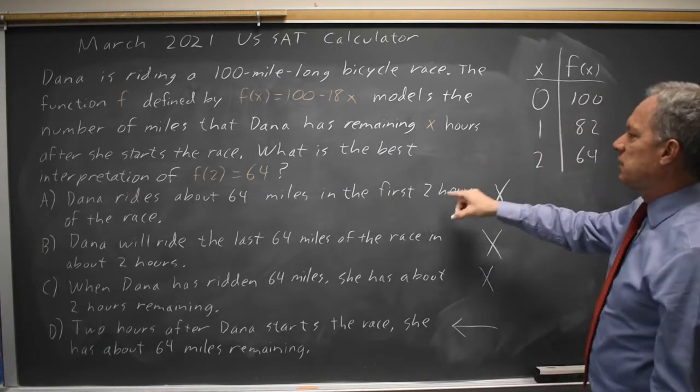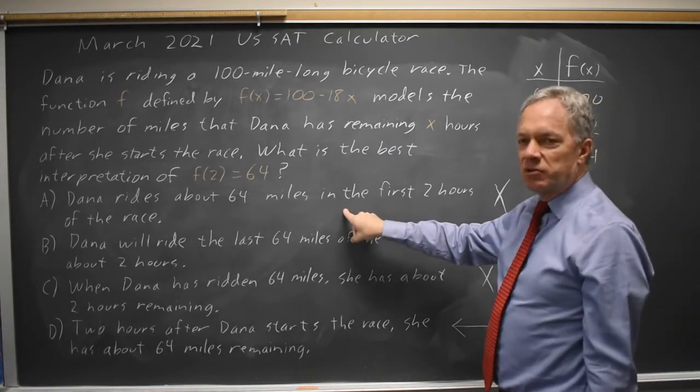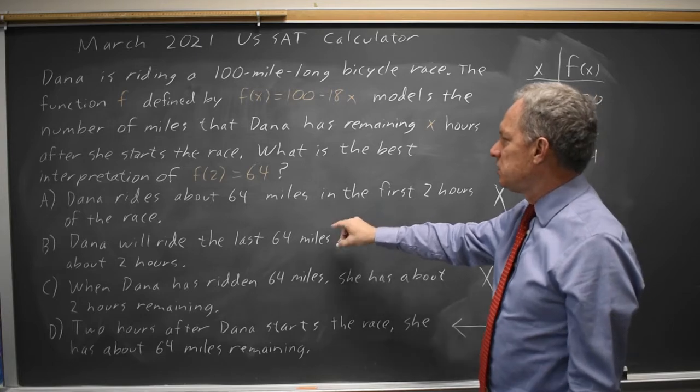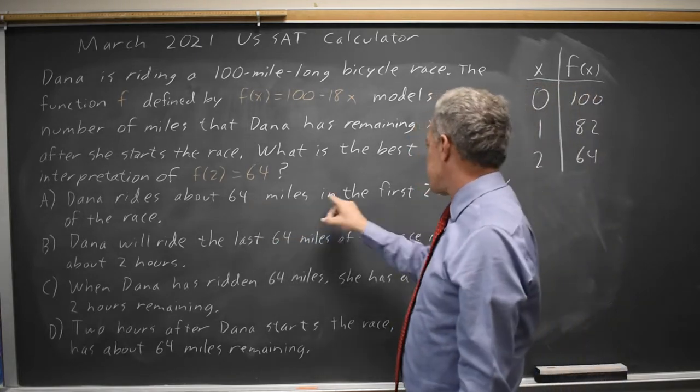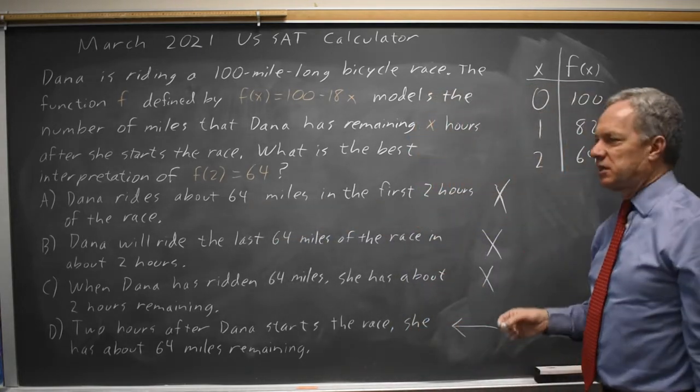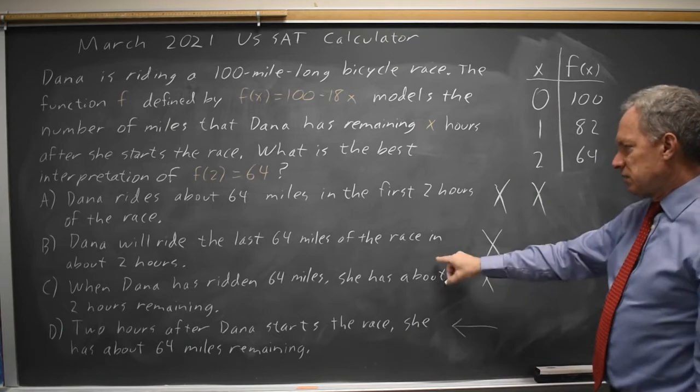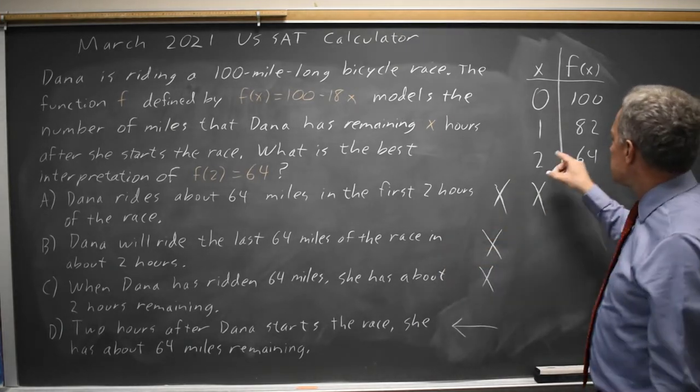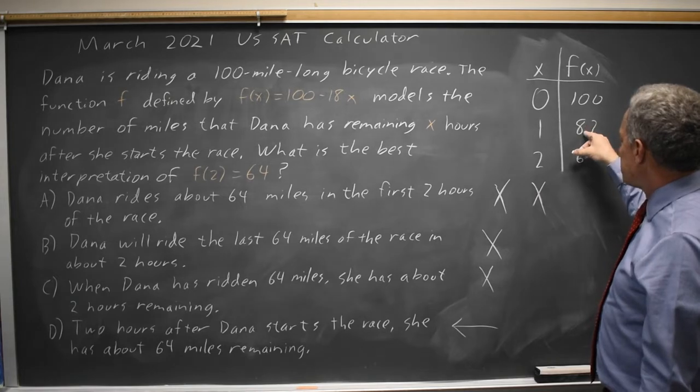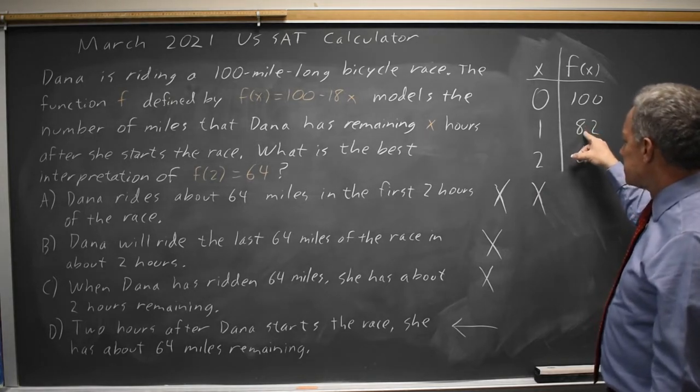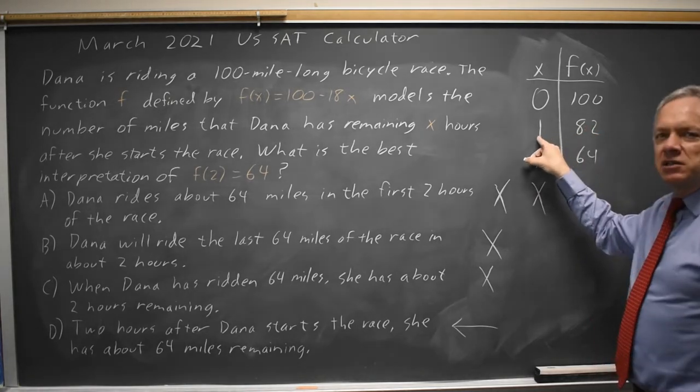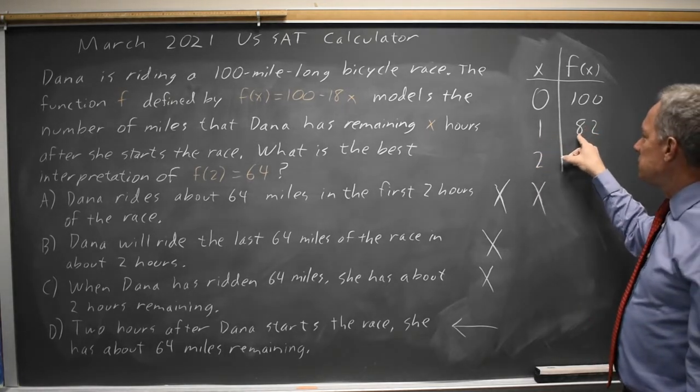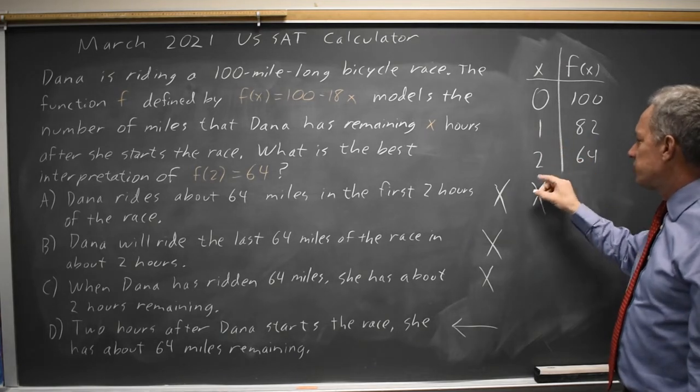If you try this table here, if this were right, it would also make sense to say Dana rides about 100 miles in the first 0 hours of the race. And that's nonsense, we would reject that. The second one, Dana will ride the last 64 miles in 2 hours, so she'll ride the last 82 in 1 hour. It doesn't make sense that she'd ride 82 in 1 if she only rides 64 in 2 hours, so that can't be right.